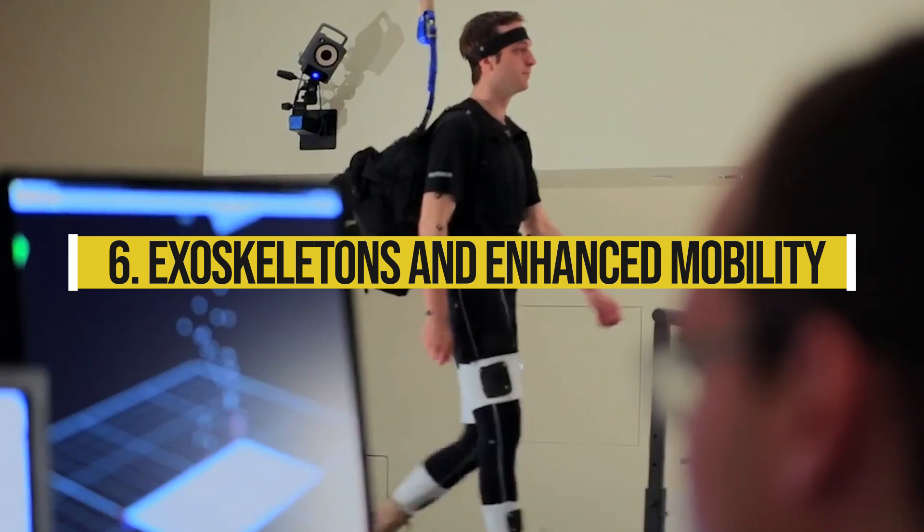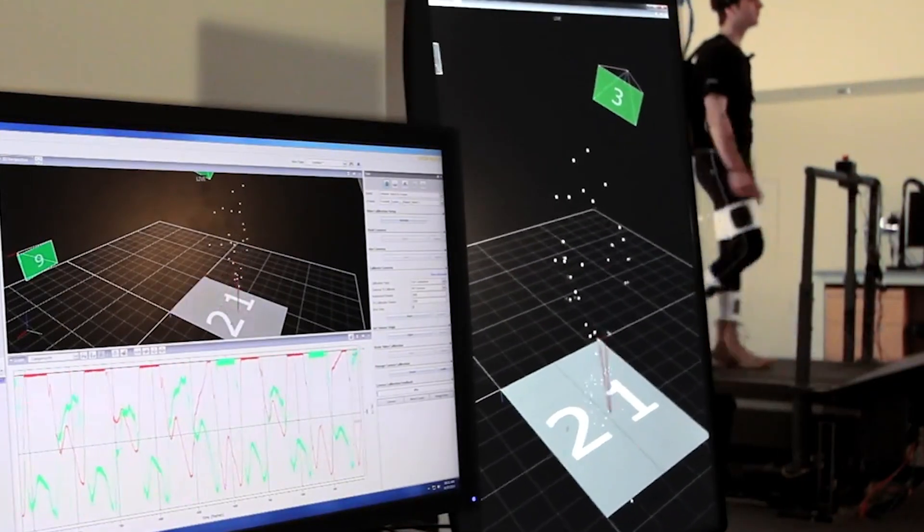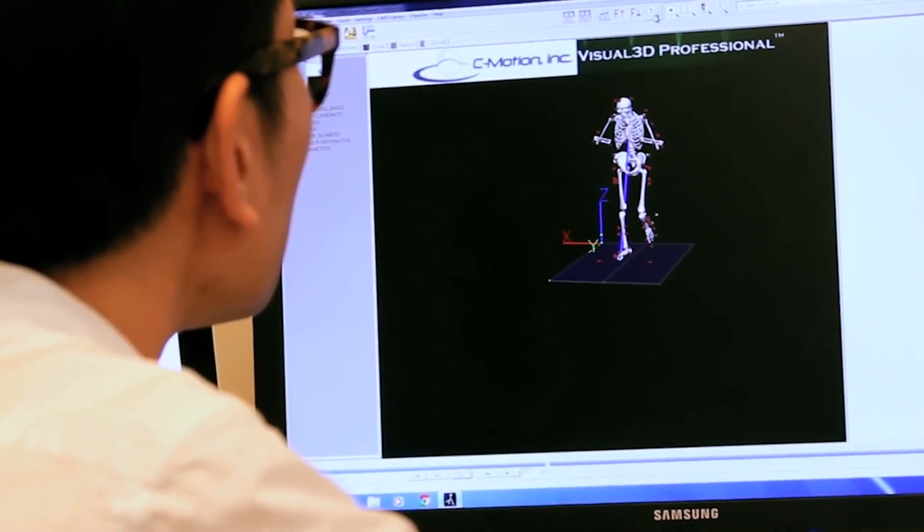Number 6. Exoskeletons and Enhanced Mobility. Wearable exoskeletons developed by companies like Rewalk and Exobionics give users superhuman strength, agility, and endurance. These suits could revolutionize physical labor and assist those with mobility impairments.